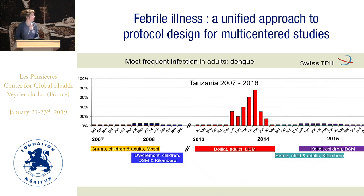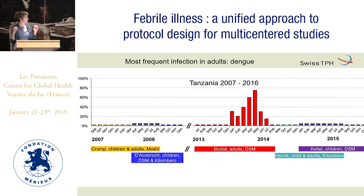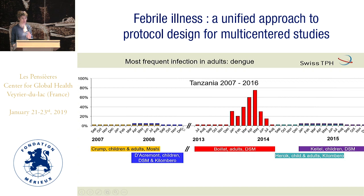The next most frequent infection in adults was dengue. But what does 'most frequent' really mean? Looking at all fever studies done in Tanzania on a time scale: the very first study had basically zero dengue, zero. Our study in children just after had zero dengue. In another study, the first month had 0.0 cases, then suddenly up to 80% of patients had dengue. Then another study in the same place — again zero. So here you have to put a small flag.